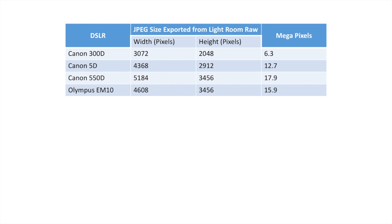So these are the cameras I've used or have access to, and I've tested their megapixel output. Rather than rely on what the manufacturers say, I've done my own tests and worked them out. I exported an image from Lightroom that was raw, converted it to JPEG at 100 percent, went into the file properties, looked at the width and height in pixels, and then calculated what that is in megapixels.